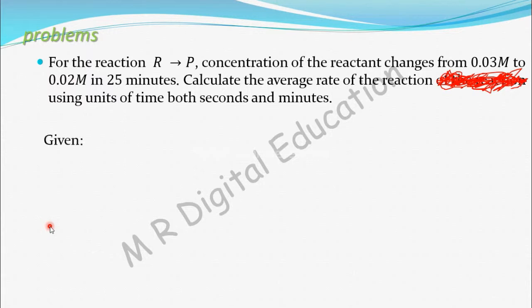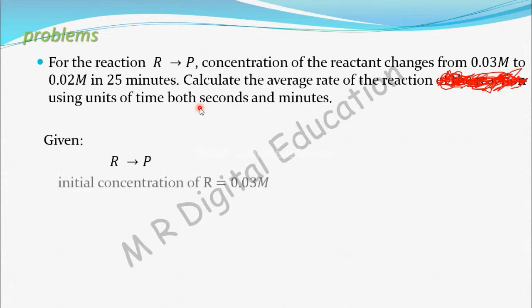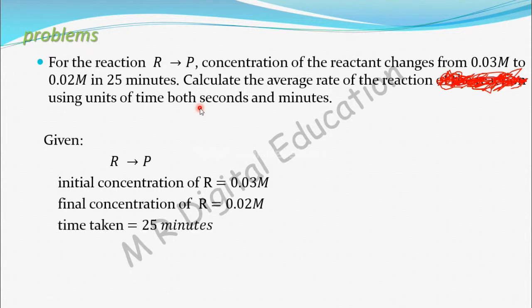What is given: this reaction R gives product, and we are told that concentration of reactant R changes from 0.03 molar to 0.02 molar in 25 minutes. So initial concentration is 0.03 molar, final concentration is 0.02 molar, and time taken is 25 minutes. We have to calculate the average rate.